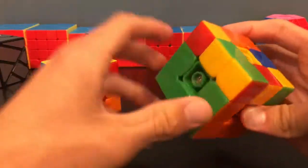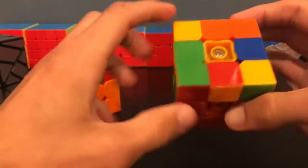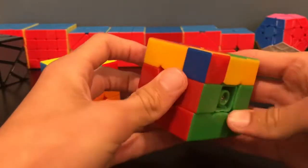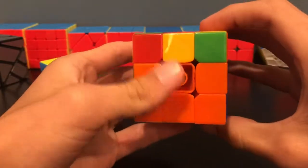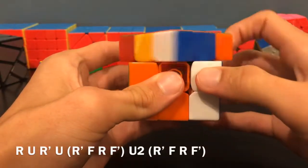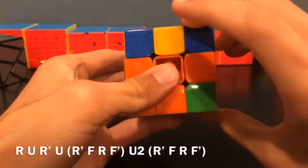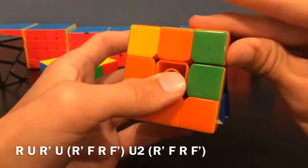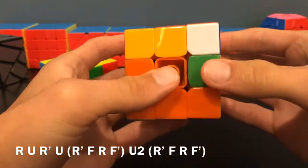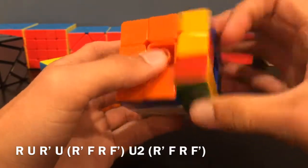This one is similar. This is when you have a diagonal line - it's the only case like that. However, you have to remember to hold these blocks of two up here in the top left. You'll do: R U R' U R' F R F' U2 R' F R F'.